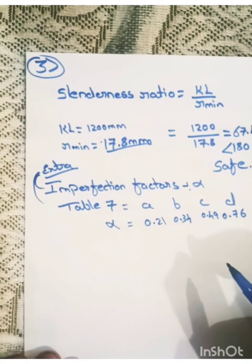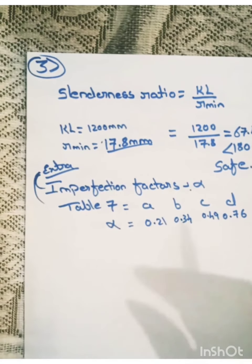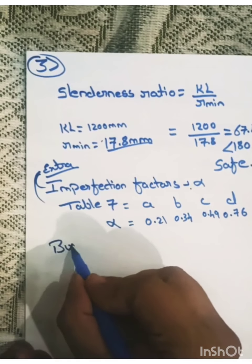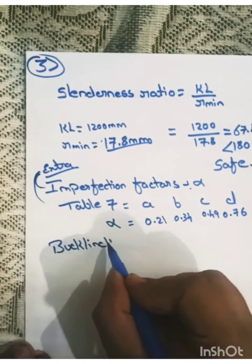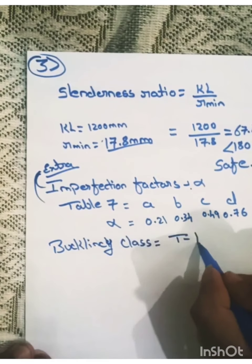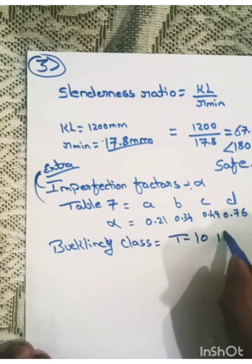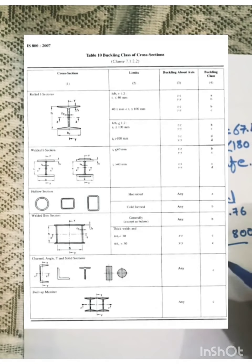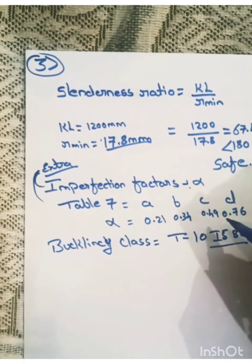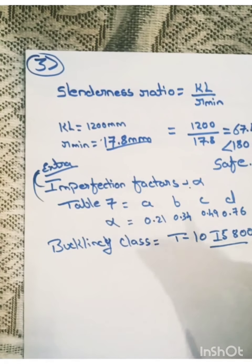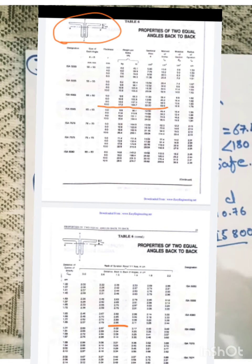So imperfection factors. This imperfection factors depends upon the buckling class. That is buckling class which are given in table number 10 of IS 800. So depending upon buckling class, we need to find the imperfection factor. That is the value of alpha. So as to know which table to refer. Do you have to refer table number 9 A or B or C or D?